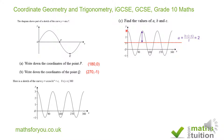Now for B: going from 0 to 360, we count the number of complete cycles. That's one cycle, then two cycles, then three cycles. To go from zero to 360, the graph completes three cycles, so B is 3.